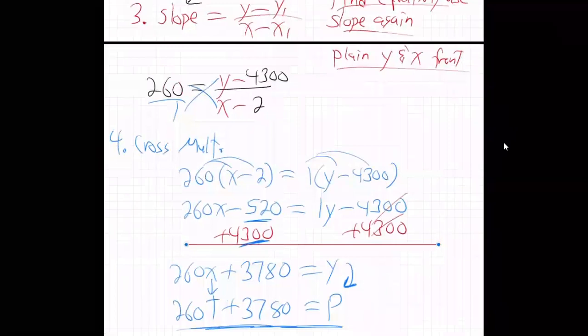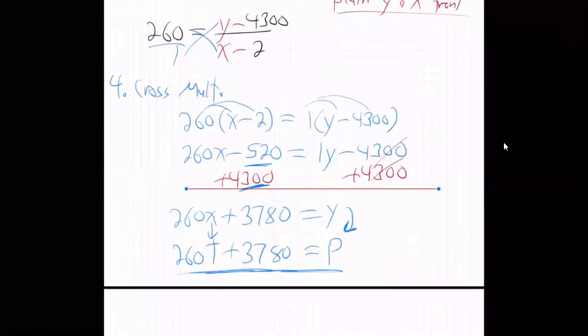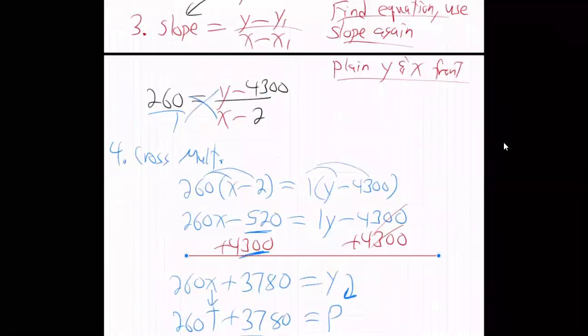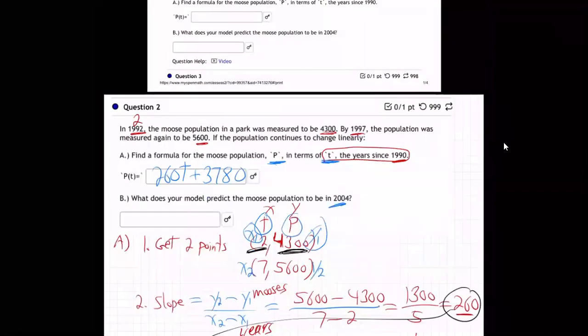And now the last thing we have to do is use that formula to predict the moose population in 2004. So 2004. If it's 2004, what is T? How can we figure that out? How can we find what T is in the year 2004?